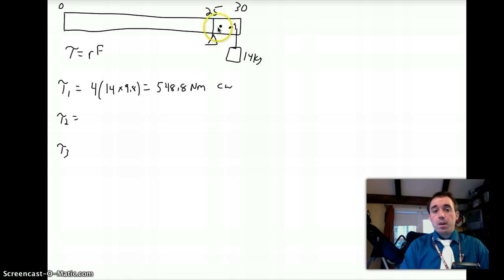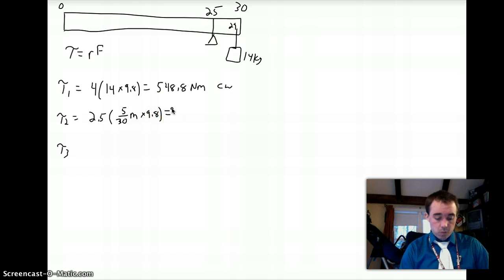Torque 2, the overhanging distance on the right, the short side, is 5. I want to use half of that, 5 meters from 25 to 30. I want to use half of that, which is why I have 2.5 as my R. The mass is going to be 5 out of 30, 5 meters out of the total 30, times M, times 9.8, which is going to give 2.5 times 5 over 30 times 9.8, 4.083 M, newton meters, also clockwise.